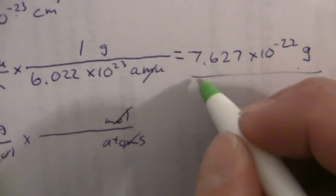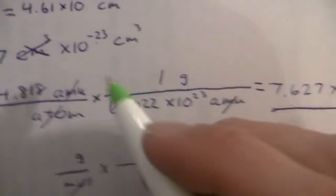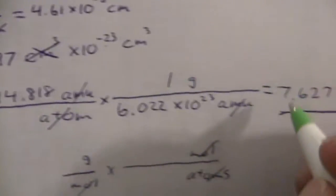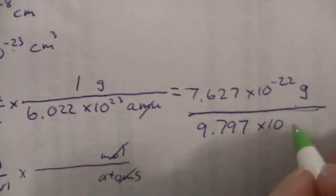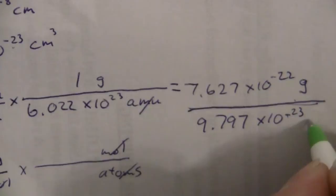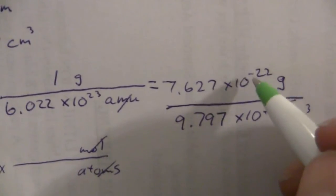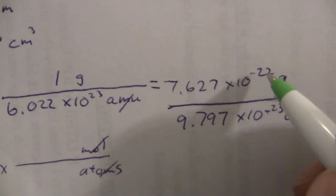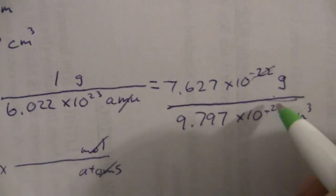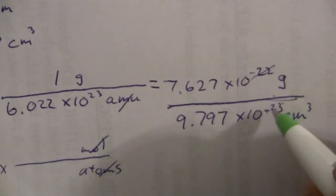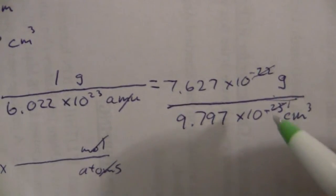So let me just go ahead and put that right here, the mass divided by 9.797 times 10 to the minus 23rd cubic centimeters, and 10 to the minus 22 over 10 to the minus 23rd. That will cancel.